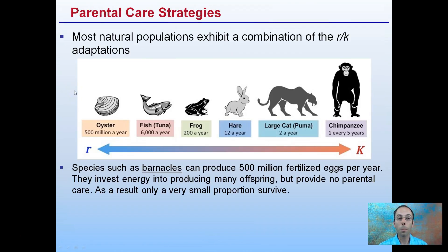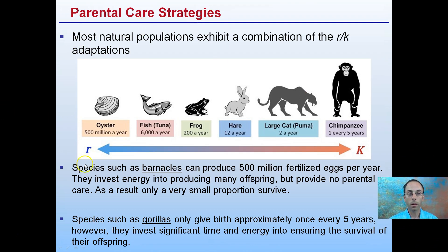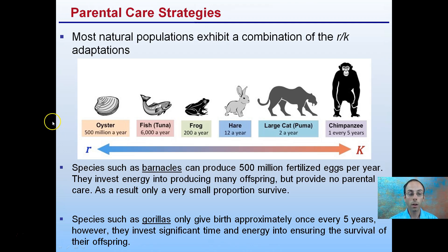Looking at parental care strategies in general, most natural populations exhibit a combination of the R-K adaptations. We're going to look at two extreme examples. On the more R-selected side, species like barnacles and oysters can produce about 500 million fertilized eggs per year. They invest energy into producing as many offspring as possible, but as a result provide no parental care, and very small portions of those 500 million actually survive.